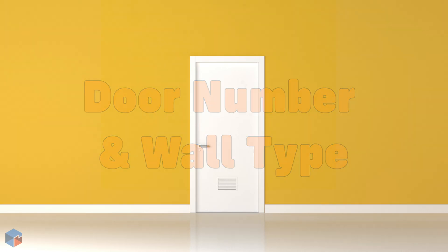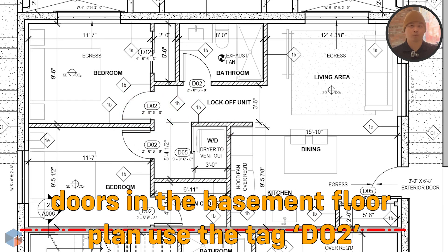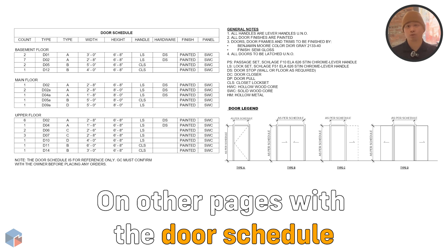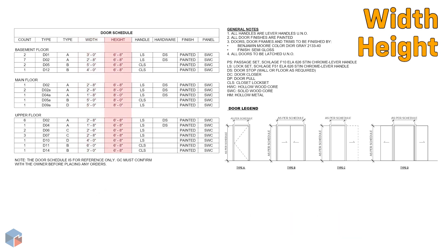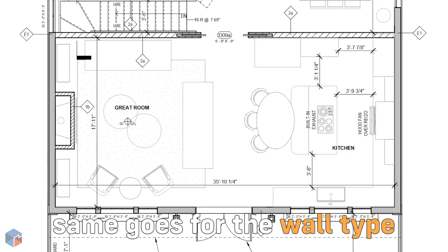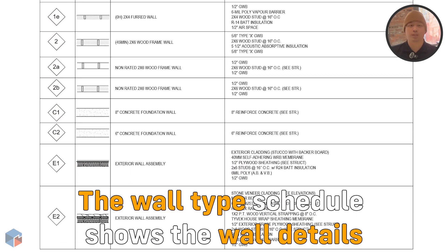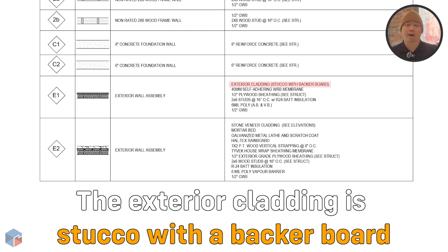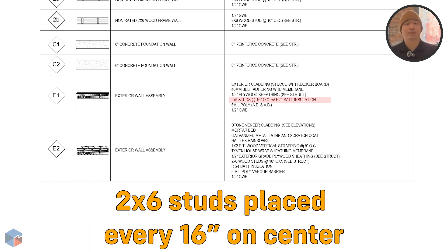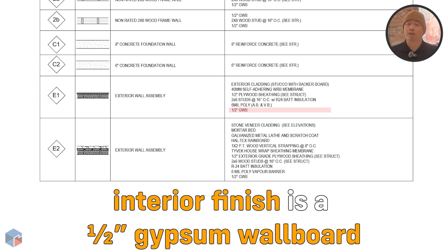After that, we have the door number and wall type. Basically, this is just a tag to help you determine what type of door or wall is being used in the floor plan. For example, the doors in the basement floor plan use the tag D02, which is used in both the bathroom and the bedroom. If we look at the other pages that contain the door schedule, you can see details such as the width and height, the handle, hardware, finish, and panel type. You can also see what it looks like in the legend. The same goes for the wall type. As you can see on the main floor plan, the exterior wall is tagged E1. If you look at the wall type schedule, you can see the details: the exterior cladding is stucco with a backer board, a 40mm water resistant barrier, half inch plywood sheathing, two by six studs placed every 16 inches on center, batt insulation, six mil polyethylene as vapor barrier, and the interior finish of half inch gypsum wall board.